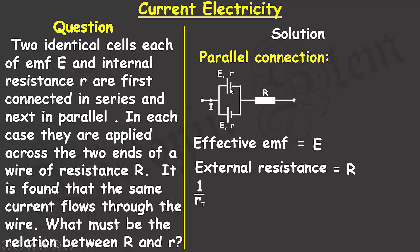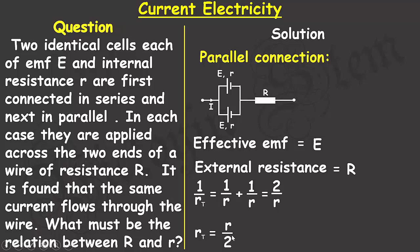To find the effective internal resistance, I apply the formula: 1 divided by R subscript T, where R subscript T stands for the effective internal resistance of the cells in the circuit. Since there are two cells, it will be 1/r for the first cell plus 1/r for the second cell. Solving these two fractions gives 2/r, so the total internal resistance R subscript T equals r divided by 2.